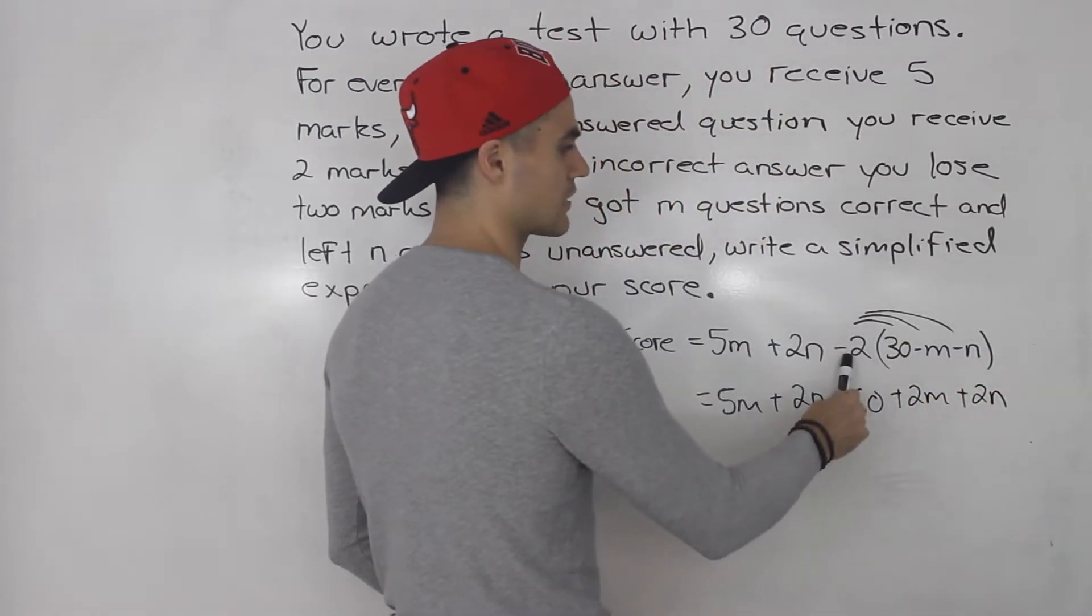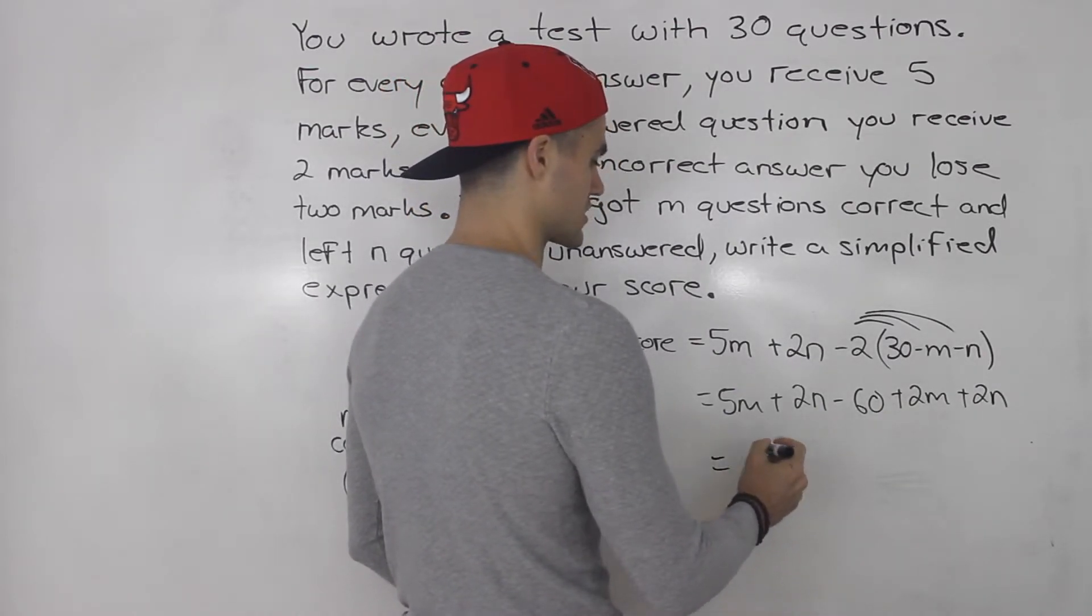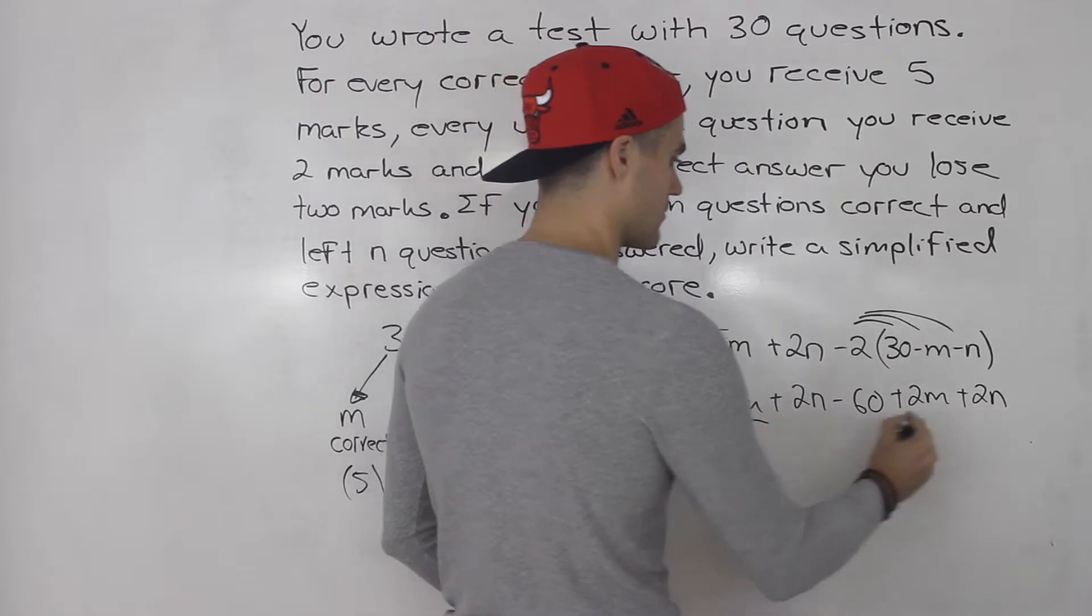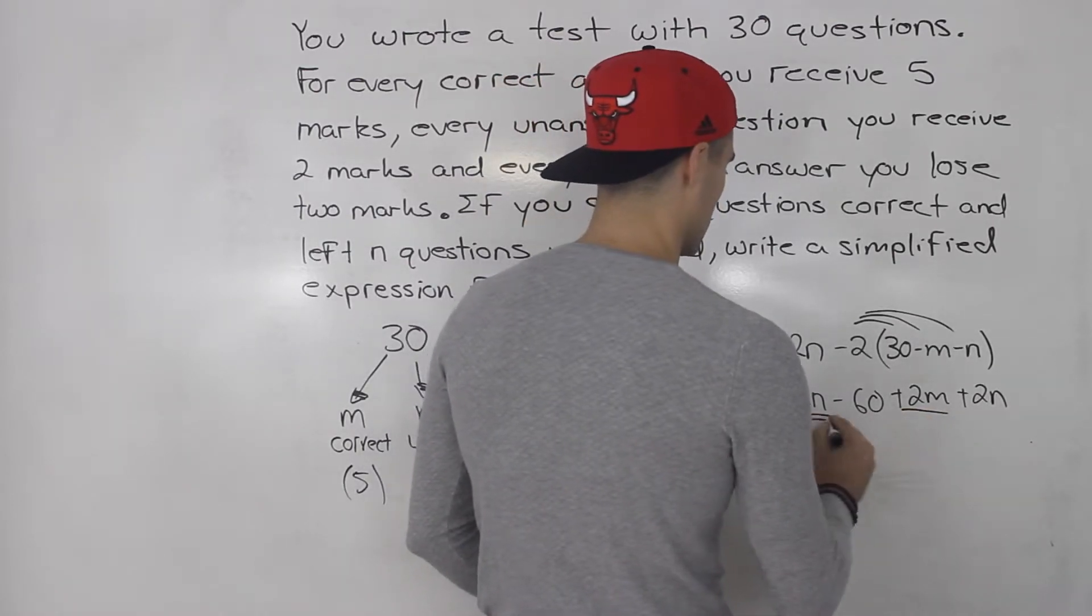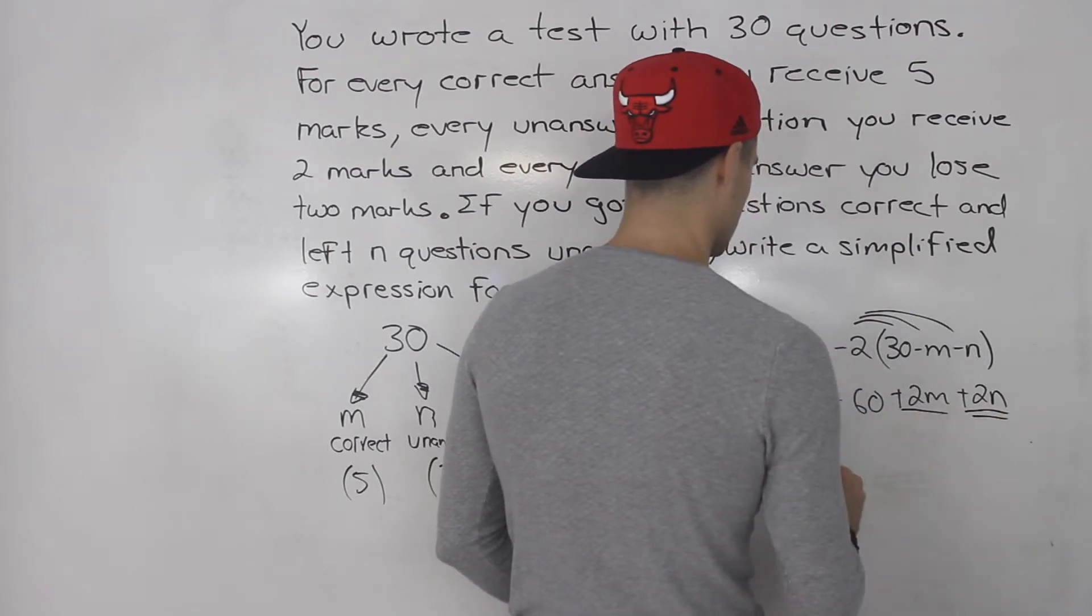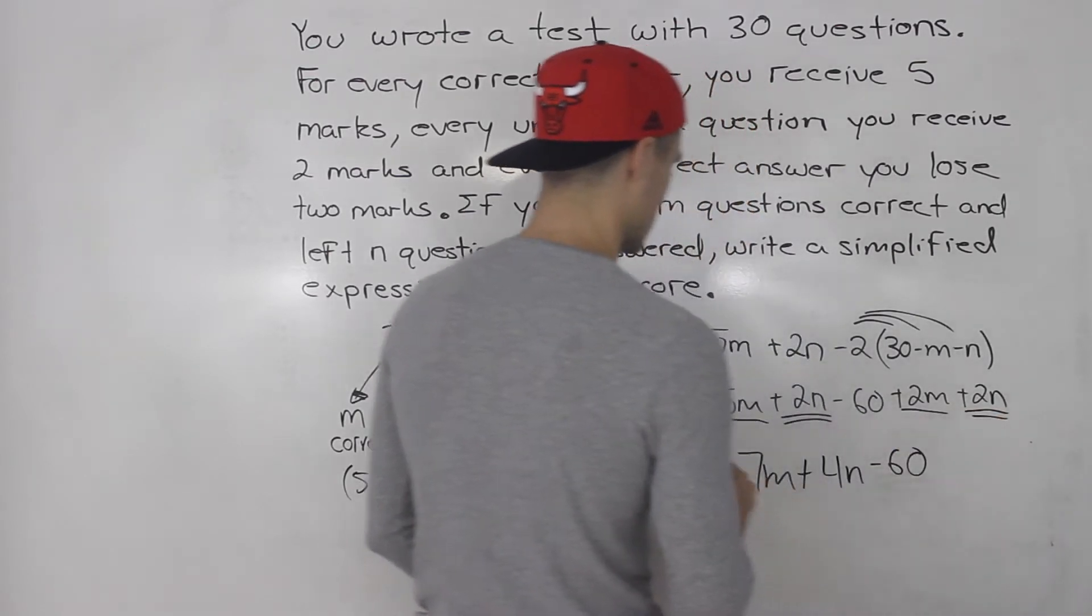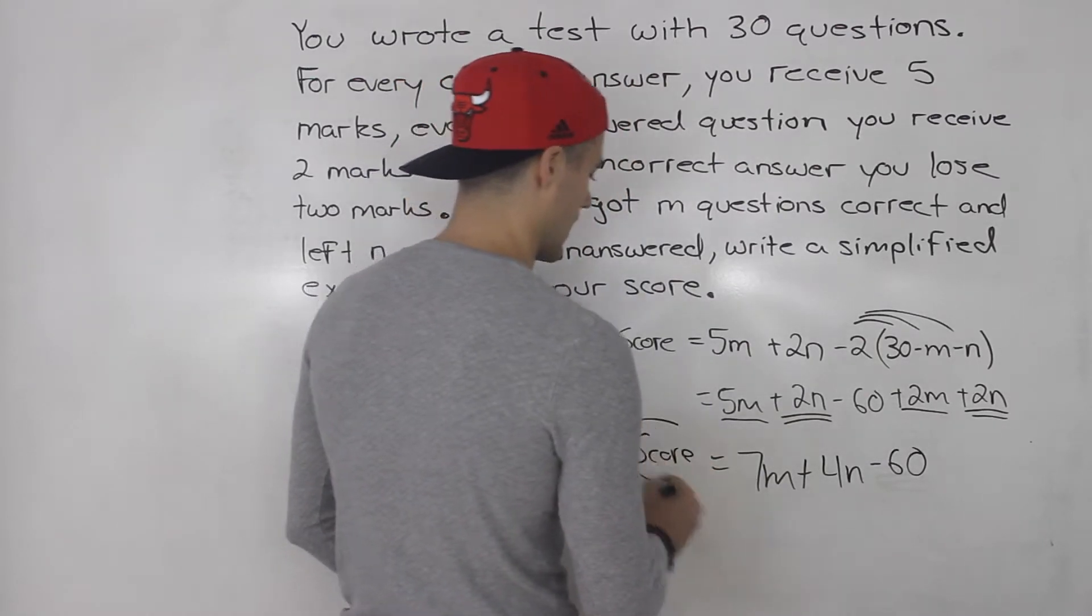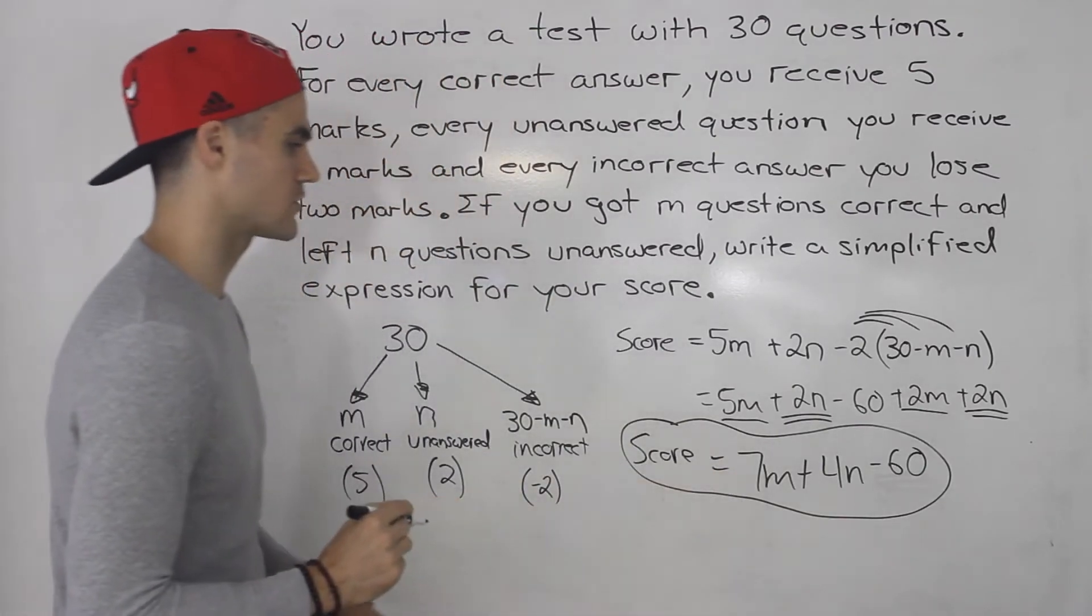Then from here you can just collect like terms. So 5M plus 2M gives us 7M. 2N plus 2N gives us 4N. And then we got this minus 60 here. So that there is your expression for your final score.